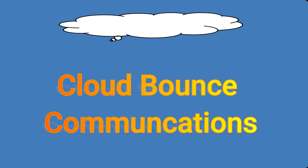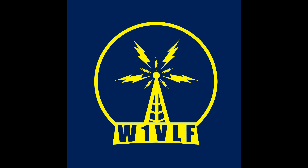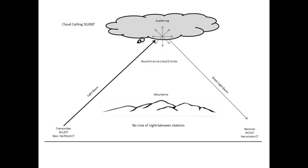Hey everybody, my name is Paul W1VLF and what you've just been listening to was the sound of a modulated light beam that was bounced off a cloud and received approximately five miles away. I got this idea from a searchlight that I noticed you could see from miles away, and thought: if a searchlight can be visible from that kind of distance in a big radius, why can't my own light beam be that way and I can modulate it and receive it.